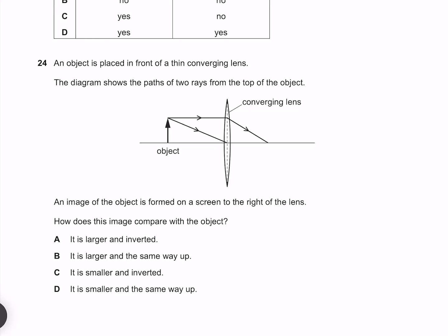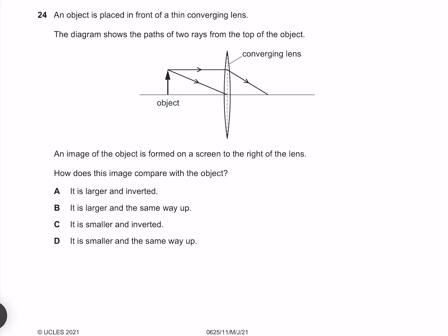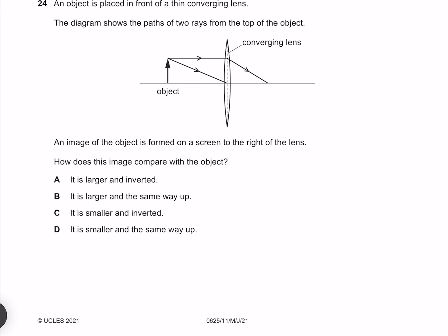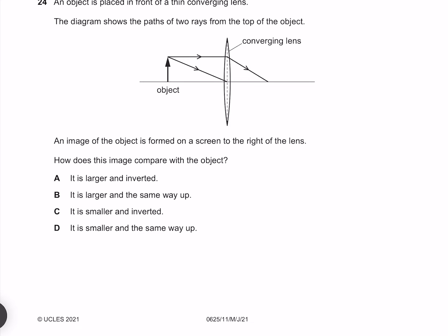An object is placed in front of a thin converging lens. The diagram shows the path of two rays from the top of the object. An image of the object is formed on a screen to the right of the lens. How does this image compare with the object? First of all, our ray going straight through the middle is going to continue as it is, as is our ray through our focal point. Our object is therefore going to be inverted and also enlarged. Therefore our correct answer must be A.